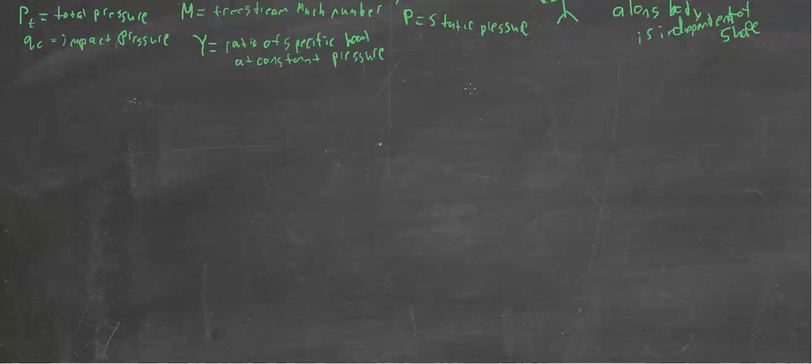So the isentropic flow, the ratio of the total pressures to the static pressures, if we take Pt over P, you're going to get 1 plus gamma minus 1 over 2, M squared, is a pre-derived equation. And we take that exponentially, gamma over gamma minus 1.